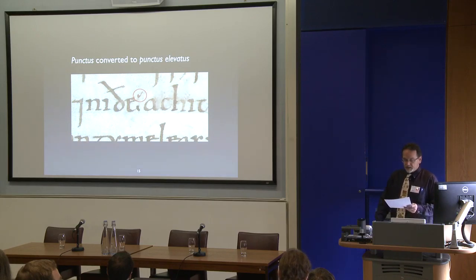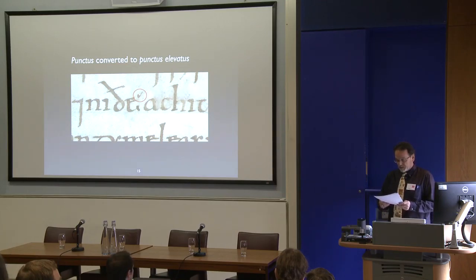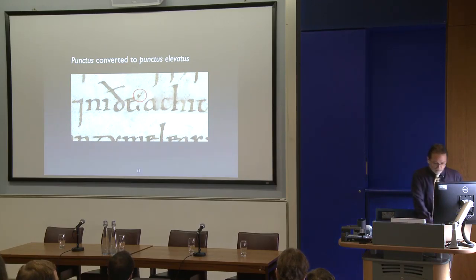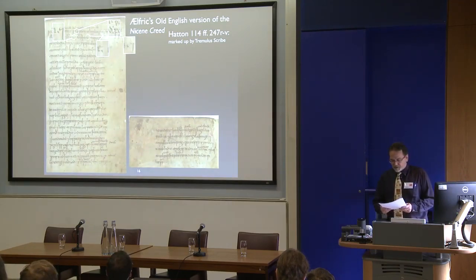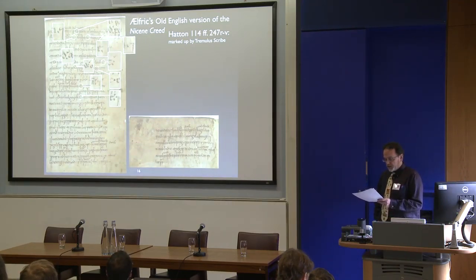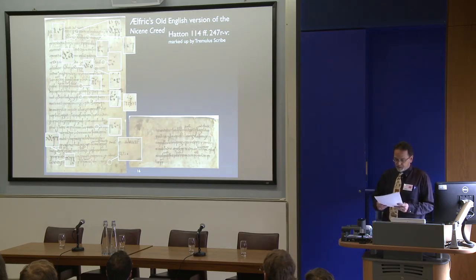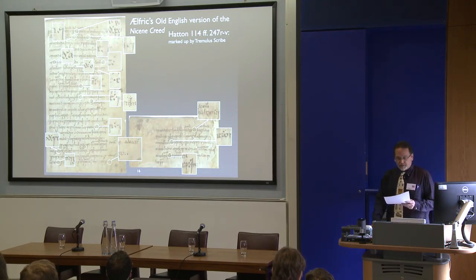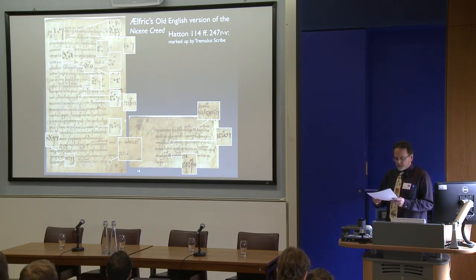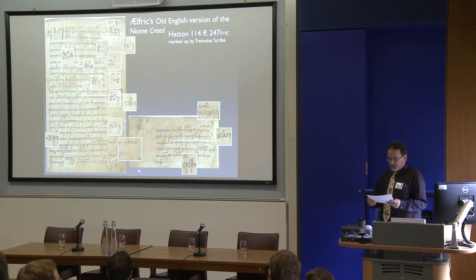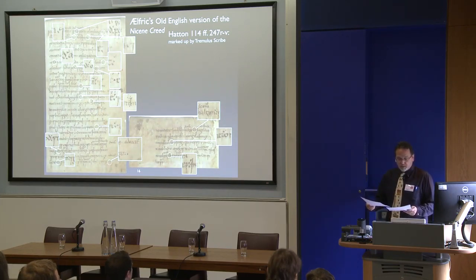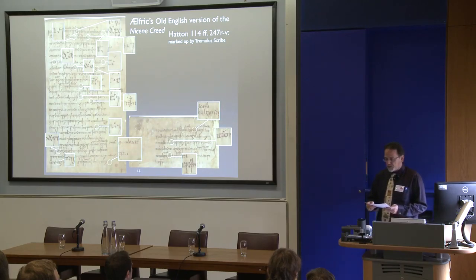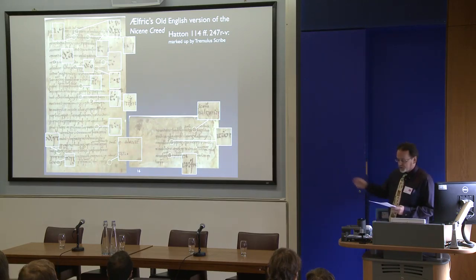There are several ways to demonstrate that the Tremulous Hand was indeed using punctuation interventions in this way, but let me give you just one. In a rare before-and-after glimpse of Tremulous's activities, he's marked Ælfric's translation of the Nicene Creed, written on folios 247 recto and verso of Hatton 114, with his full arsenal of interventions. He's clarified word divisions, modified vowels both medially and with a superscript I above the verbal prefix GE, glossed a number of mostly small easy words, and introduced a fairly high number of punctuation interventions — highlighted here.